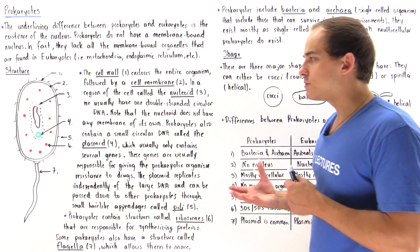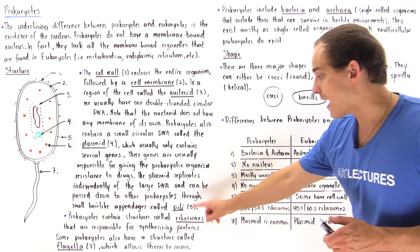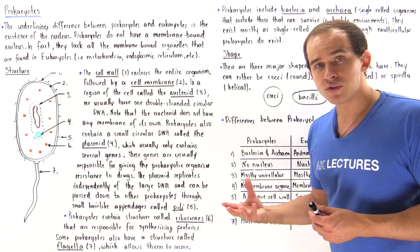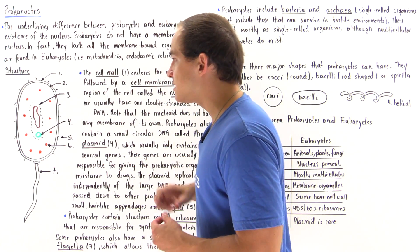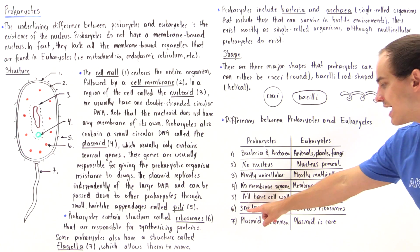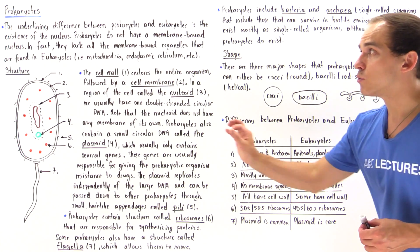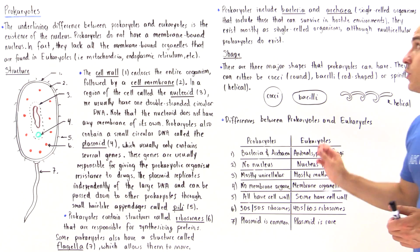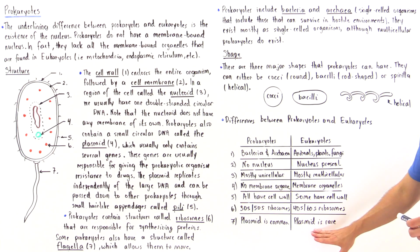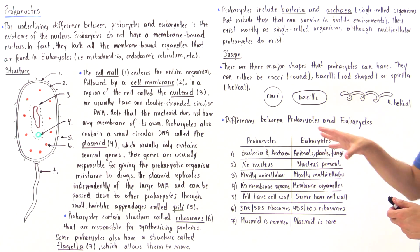The types of ribosomes differ between prokaryotes and eukaryotes. Within prokaryotes, we have the 30S and the 50S subunits, while in eukaryotic organisms we have the 40S and the 60S subunits that compose our ribosomes. Finally, plasmids are very common within prokaryotic organisms, but although plasmids do exist within eukaryotic organisms, they are actually very rare. These are the major differences that exist between prokaryotes and eukaryotes.